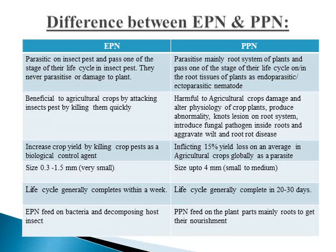It is important to understand the difference between EPN and PPN. EPN stands for Entomopathogenic Nematodes; PPN stands for Plant Parasitic Nematodes. In EPN, it is only parasitic to insect pests, and all stages of its life cycle occur inside the insect pest. Whereas in plant parasitic nematodes, the parasite mainly attacks the root system of plants and completes the life cycle as either endo-parasitic or ecto-parasitic nematodes. EPN is beneficial to agricultural crops, whereas plant parasitic nematodes are harmful.